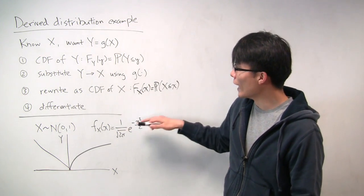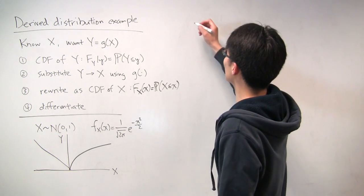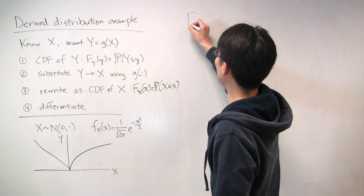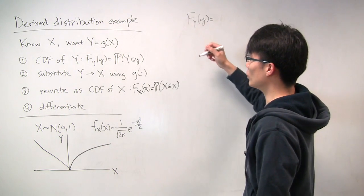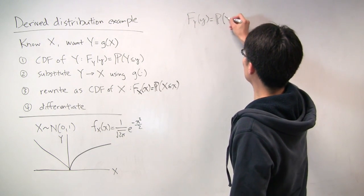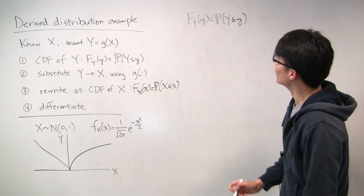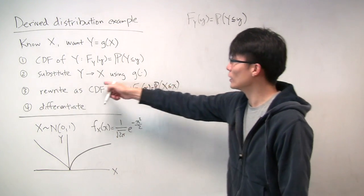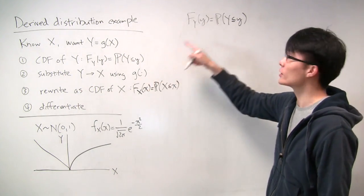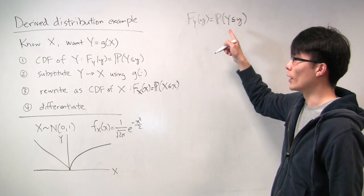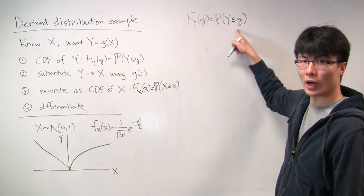We have everything we need, so let's go through the process and calculate the PDF of y. The first thing we do is write out the CDF of y: it's the probability that the random variable y is less than or equal to some little y. The next step is to substitute in terms of x, because we know things about x but nothing directly about y. So what is the probability that the random variable y is less than or equal to little y?